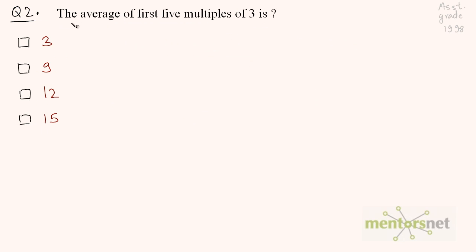Question 2: What is the average of the first 5 multiples of 3? Let us list them: 3 times 1 is 3, 3 times 2 is 6, 3 times 3 is 9, 3 times 4 is 12, 3 times 5 is 15. So these are the first 5 multiples of 3.